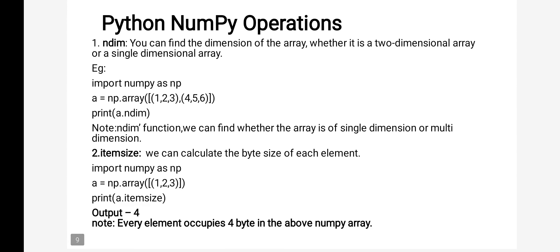Now, what operations can you perform using NumPy on arrays? The first one is ndim. Using the ndim function, you can find out how many dimensions are in the array — whether it is a one-dimensional, two-dimensional, or three-dimensional array. Here I have given an example np.array with elements 1, 2, 3, 4, 5, 6 — it is a two-dimensional array.